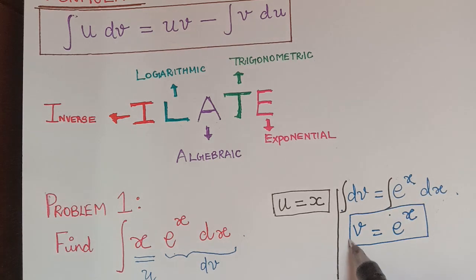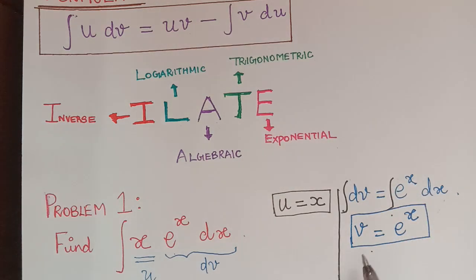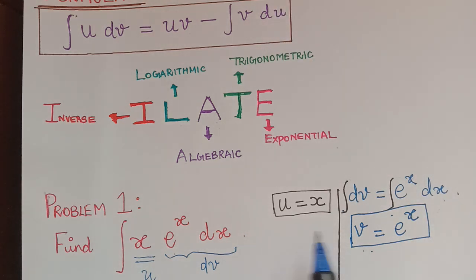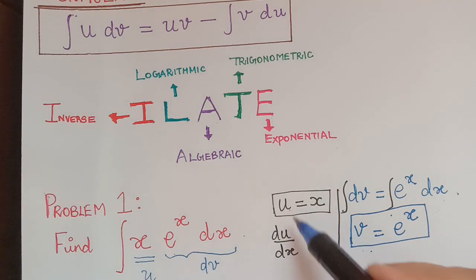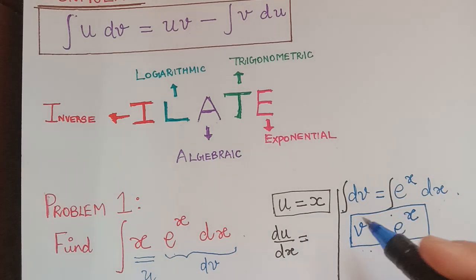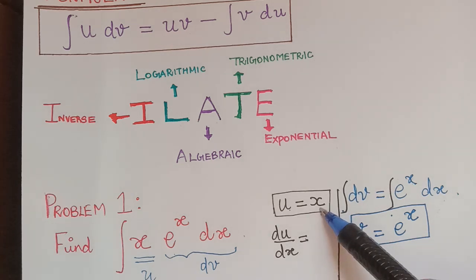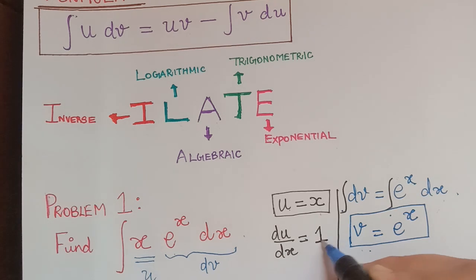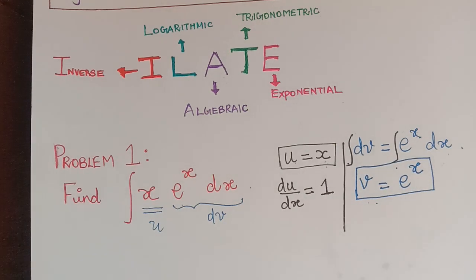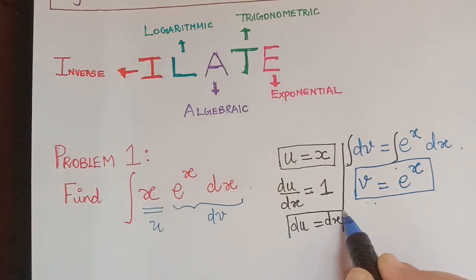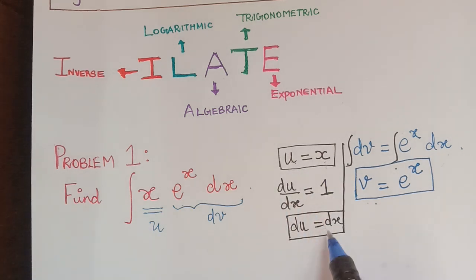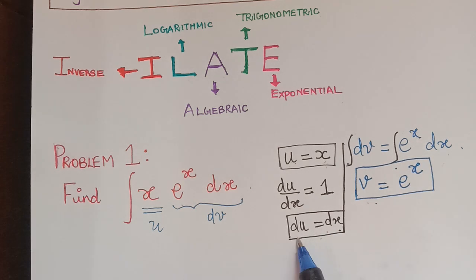Now we need du. To find du, we differentiate u with respect to x: du/dx equals the differentiation of x with respect to x, which is 1. Therefore du = dx. So we now have u = x, v = eˣ, and du = dx — all three values needed in the formula.